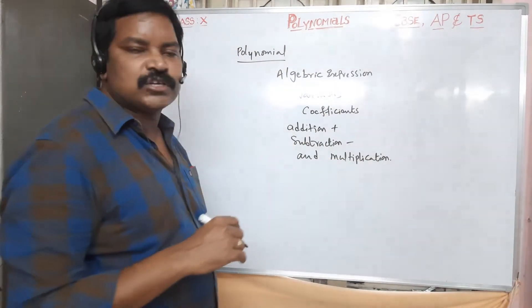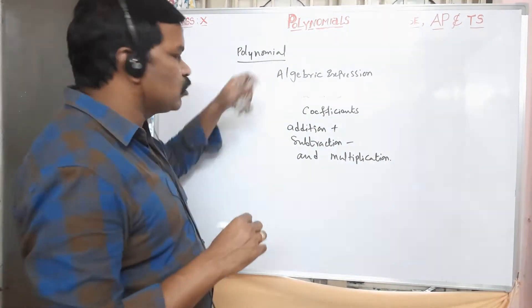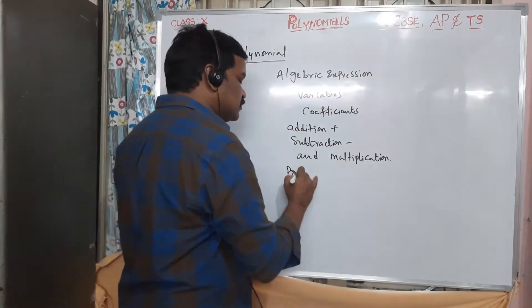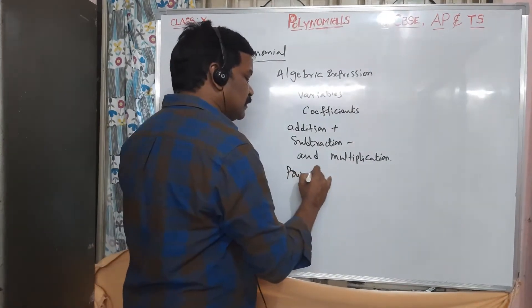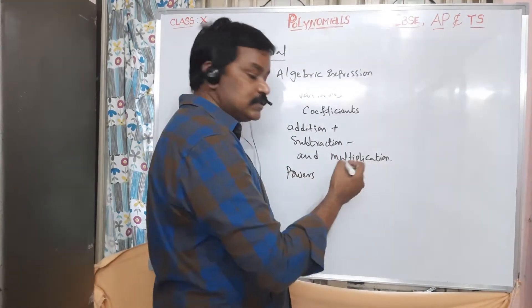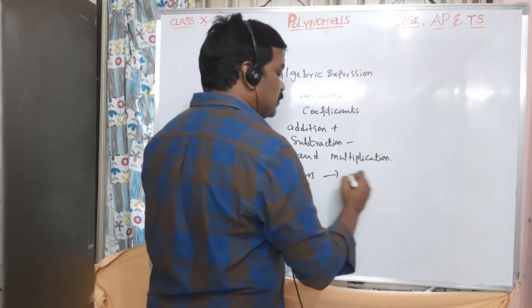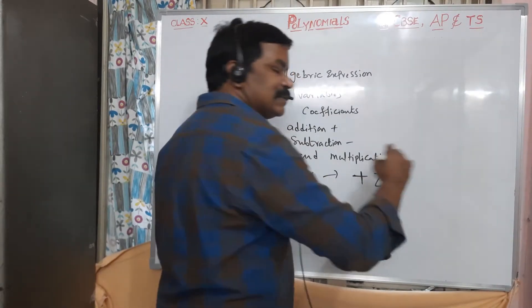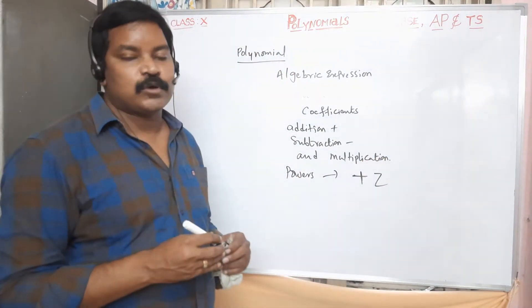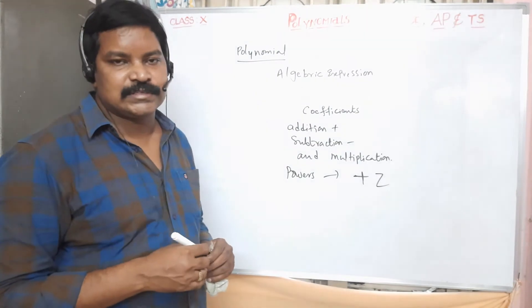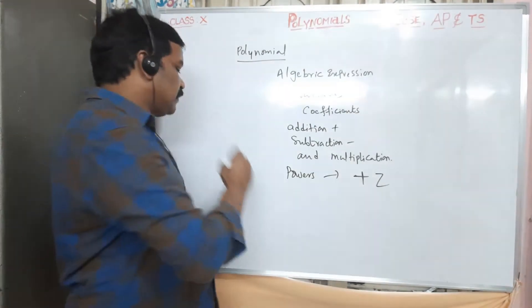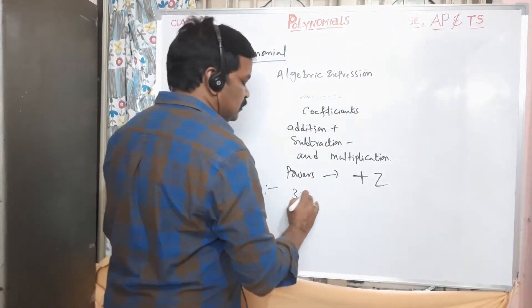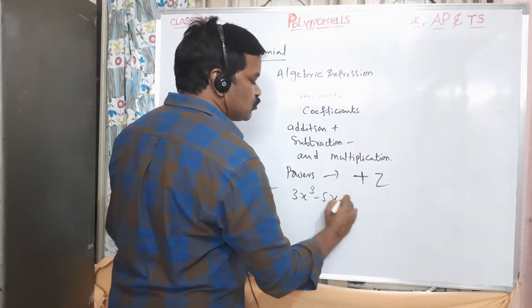The main condition of a polynomial is that the powers of the variables must be positive integers. For example, consider 3x³ minus 5x²plus 10.